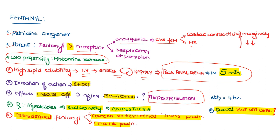Through the injectable route, fentanyl can be used exclusively with anesthesia. Transdermal fentanyl can be used for treating cancer or terminal illness pain as well as other chronic pains. Another formulation is the buccal formulation — remember, it is not available as an oral formulation. The elimination half-life is around four hours.